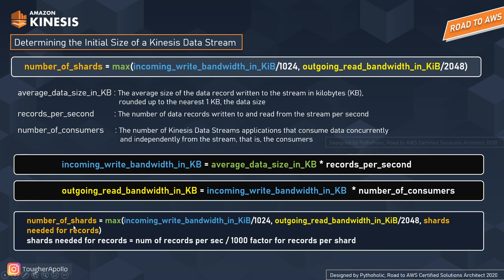The number of shards equals the max value of incoming write bandwidth divided by 1024 and outgoing read bandwidth in KB divided by 2048. There is also one more term used in the AWS Price Calculator: shards needed for records, which equals number of records per second divided by 1000 (the factor for records per shard). The more shards you need, the more you will pay to AWS. I will show a real-time example to make this clearer.